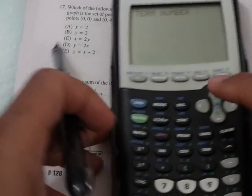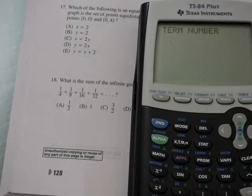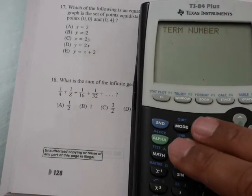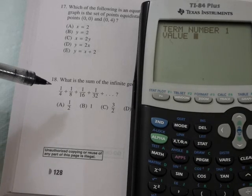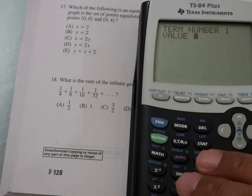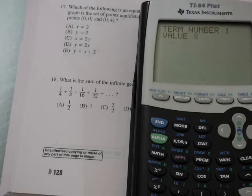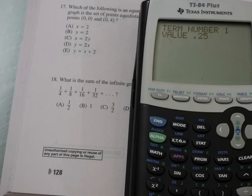Okay. The very first thing it's going to prompt you for is: what's the first term that you have? We have term number one, and the value of that term is one-fourth. So I can either put one divided by four, or I can put 0.25. So I'm going to enter 0.25.